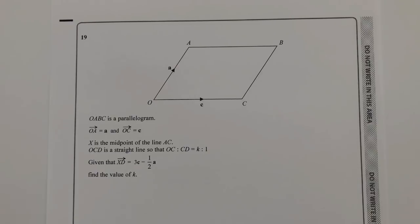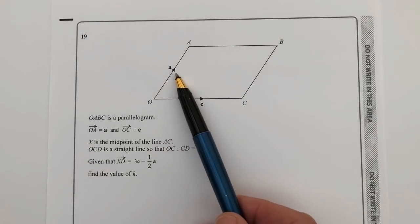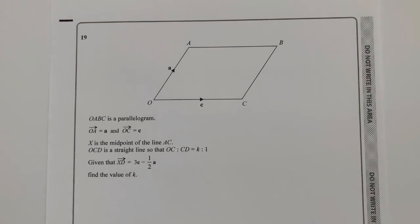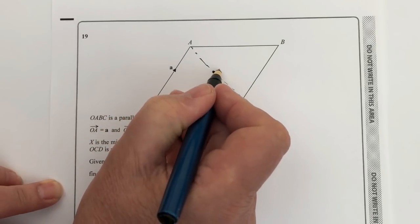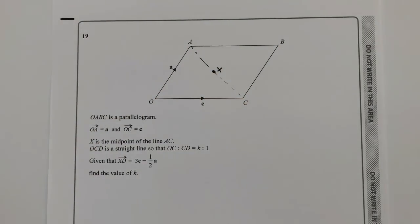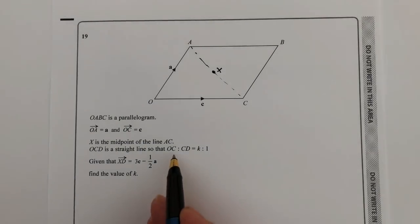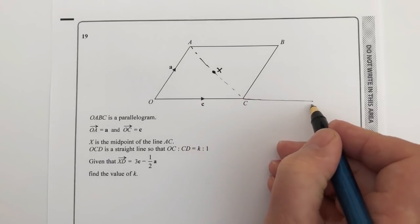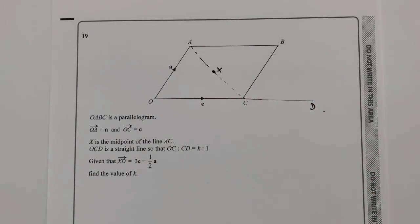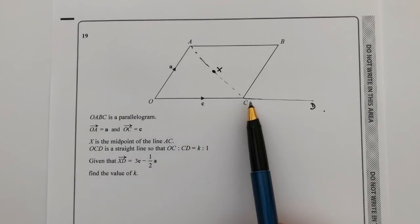We're told that vector OA is A and vector OC is C. X is the midpoint of line AC, so if I draw a little line between A and C, I've got a midpoint which I'll call X. OCD is a straight line, and the ratio OC to CD equals K to 1. So if I extend that on a little bit, there's a point D over there — we don't know where it is, but we know the ratio is K to 1 between OC and CD.